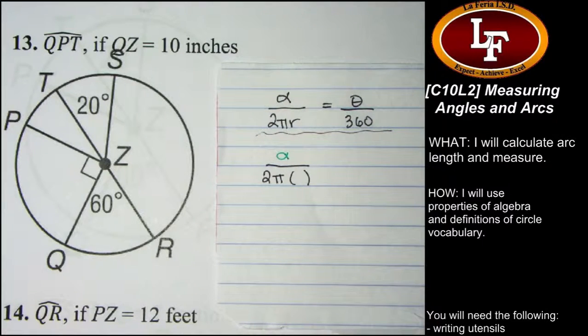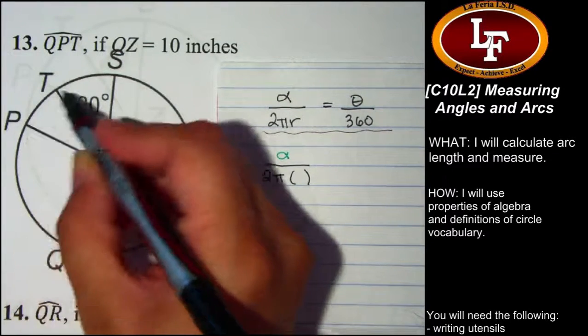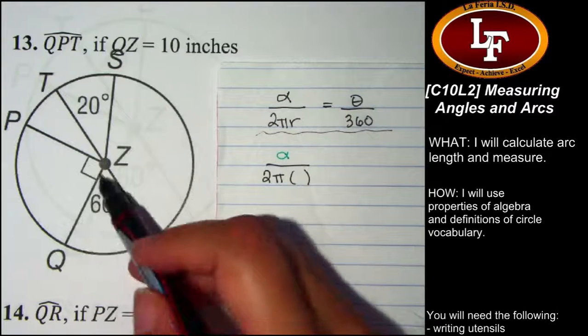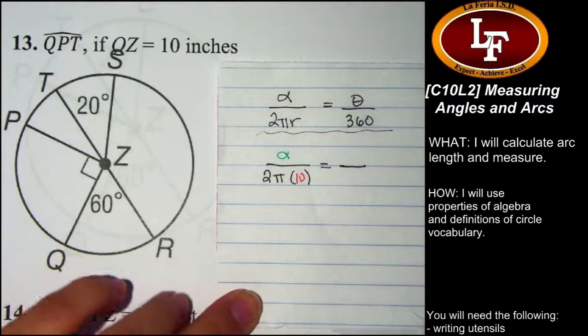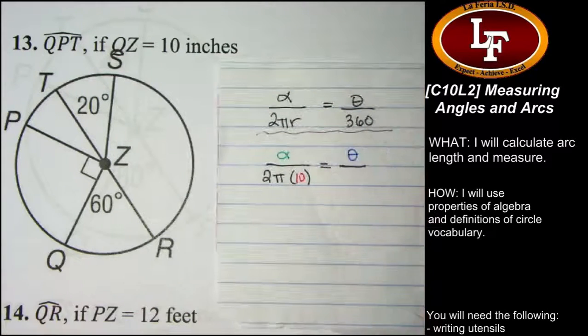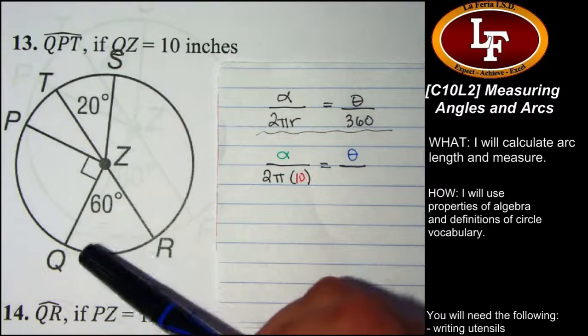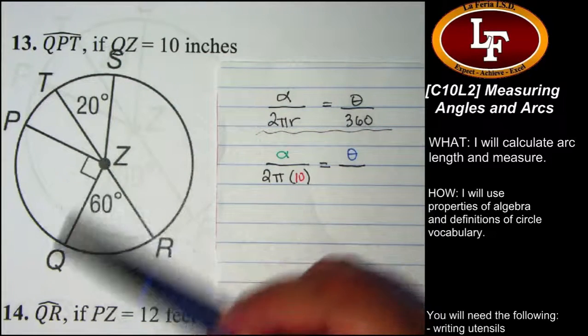Looking at the directions, we want to find arc length QPT, this minor arc. It says QZ equals 10 inches. QZ is a radius, so I'll fill in that information. Now I need to find theta, the measure of the central angle creating the arc. Looking at arc QPT and the central angle QZT, part of it, angle QZP, is 90, but I'm missing the measure of angle PZT.